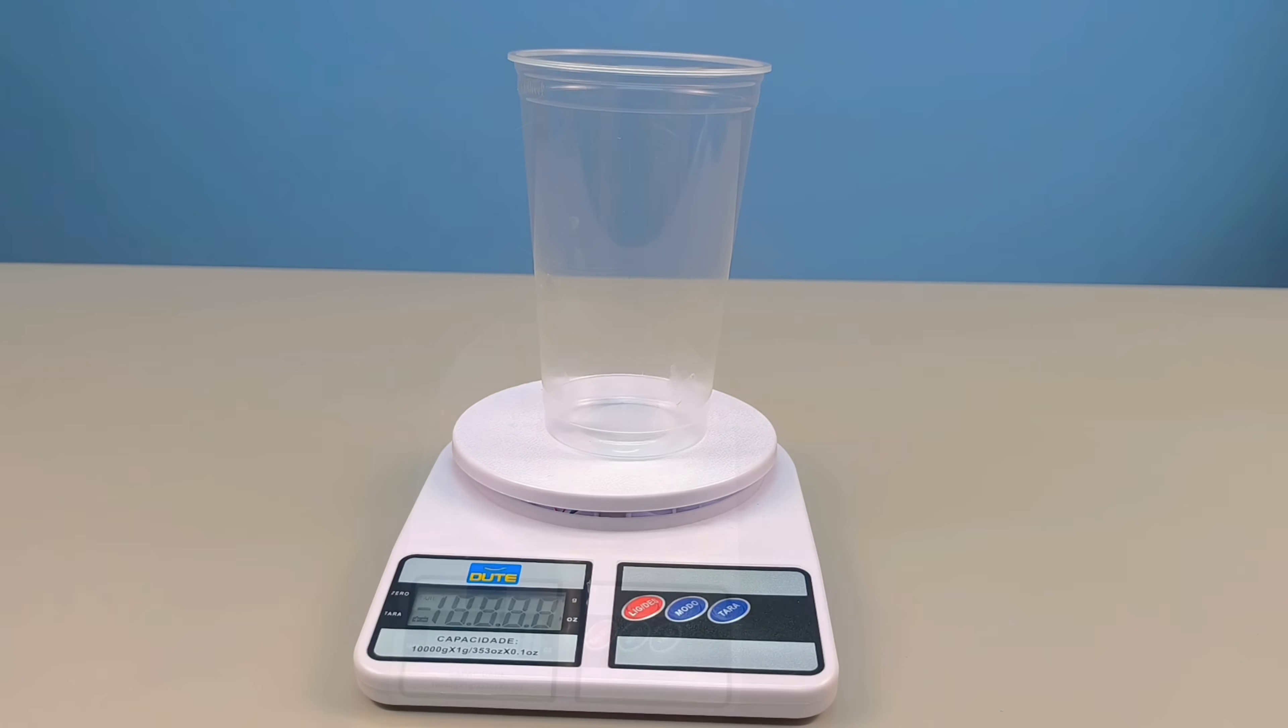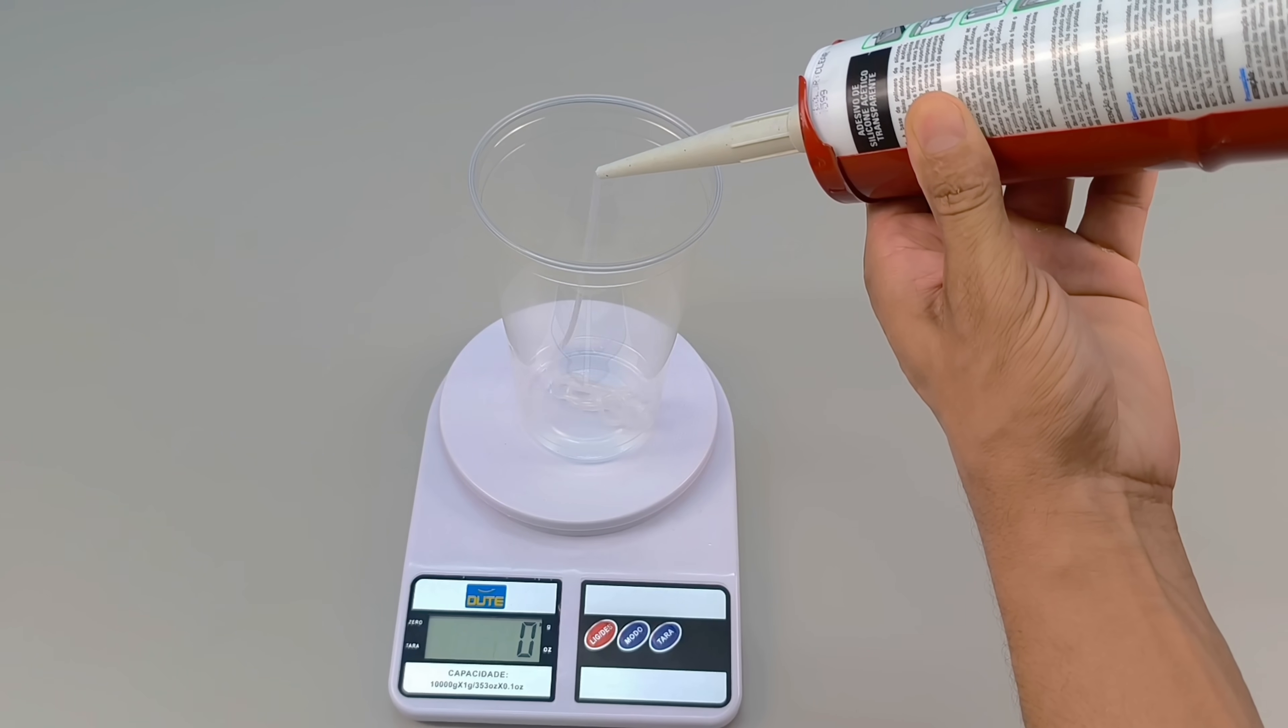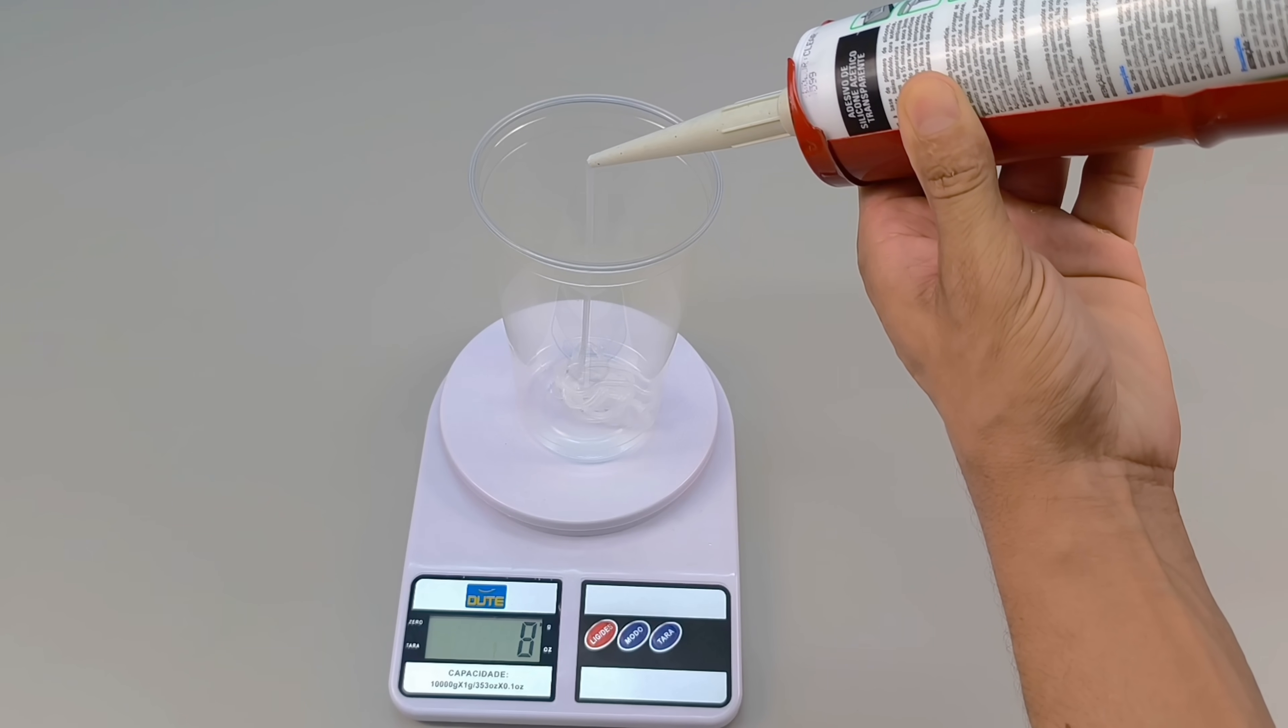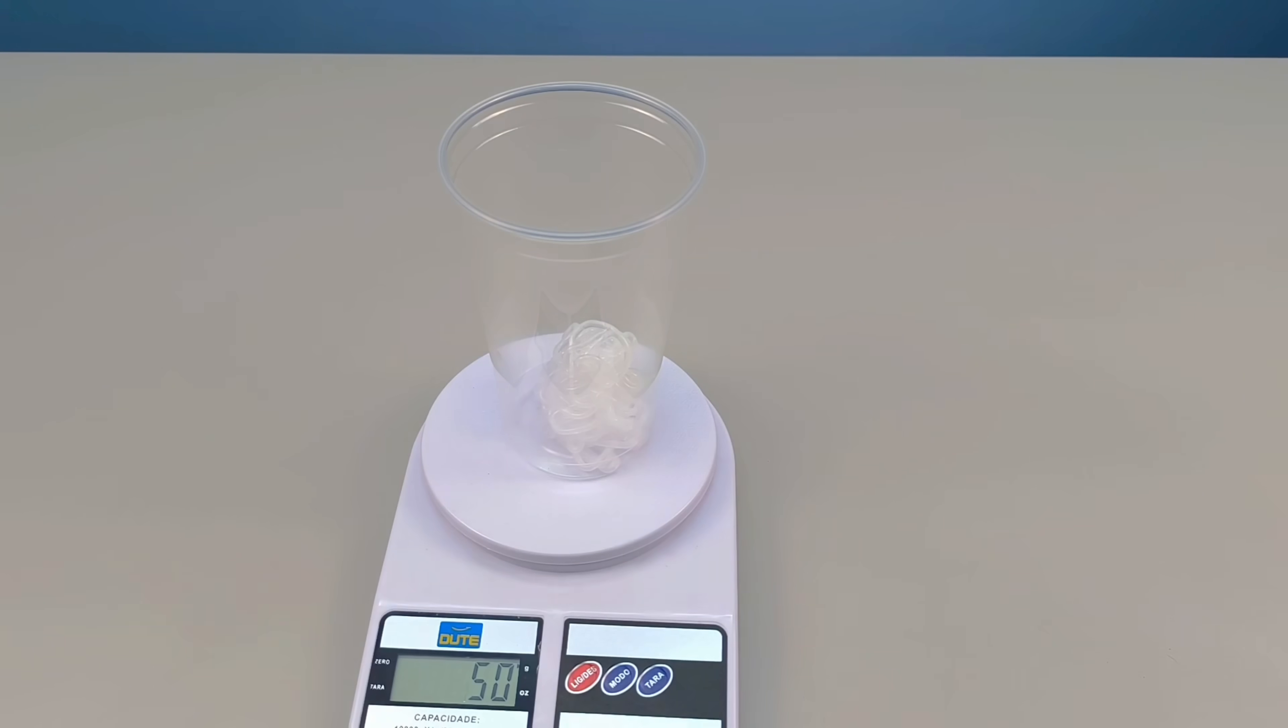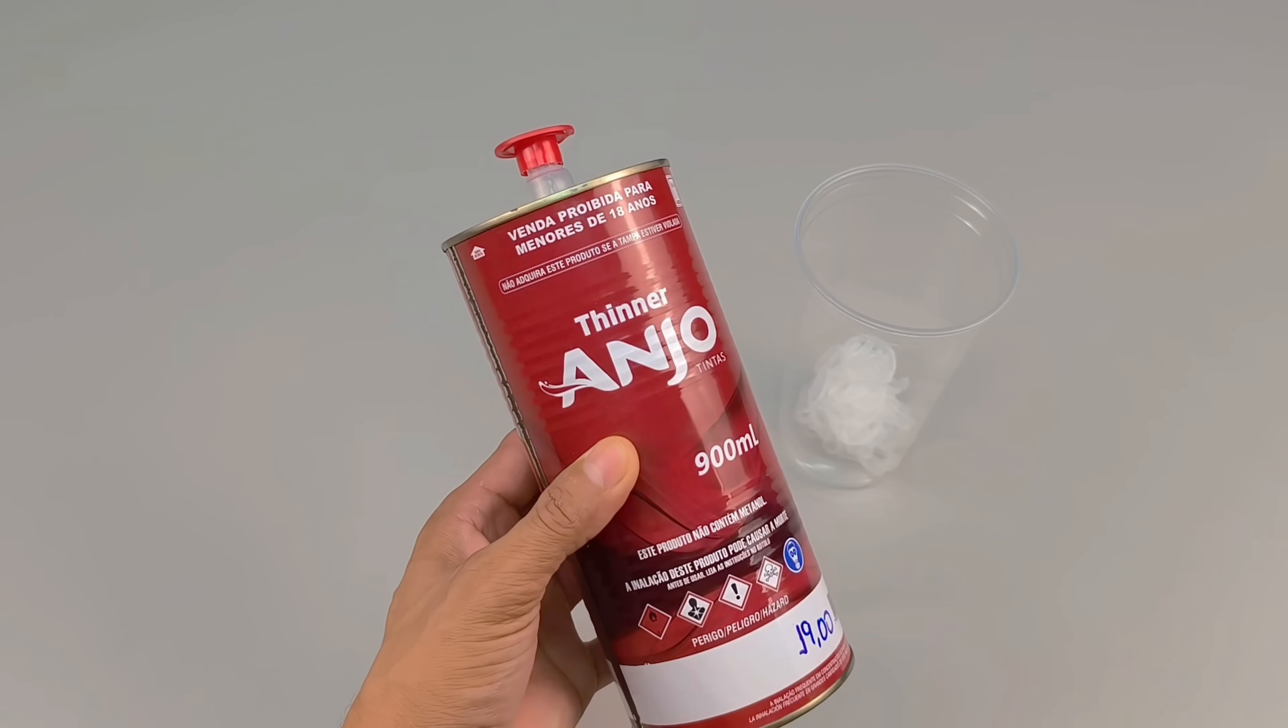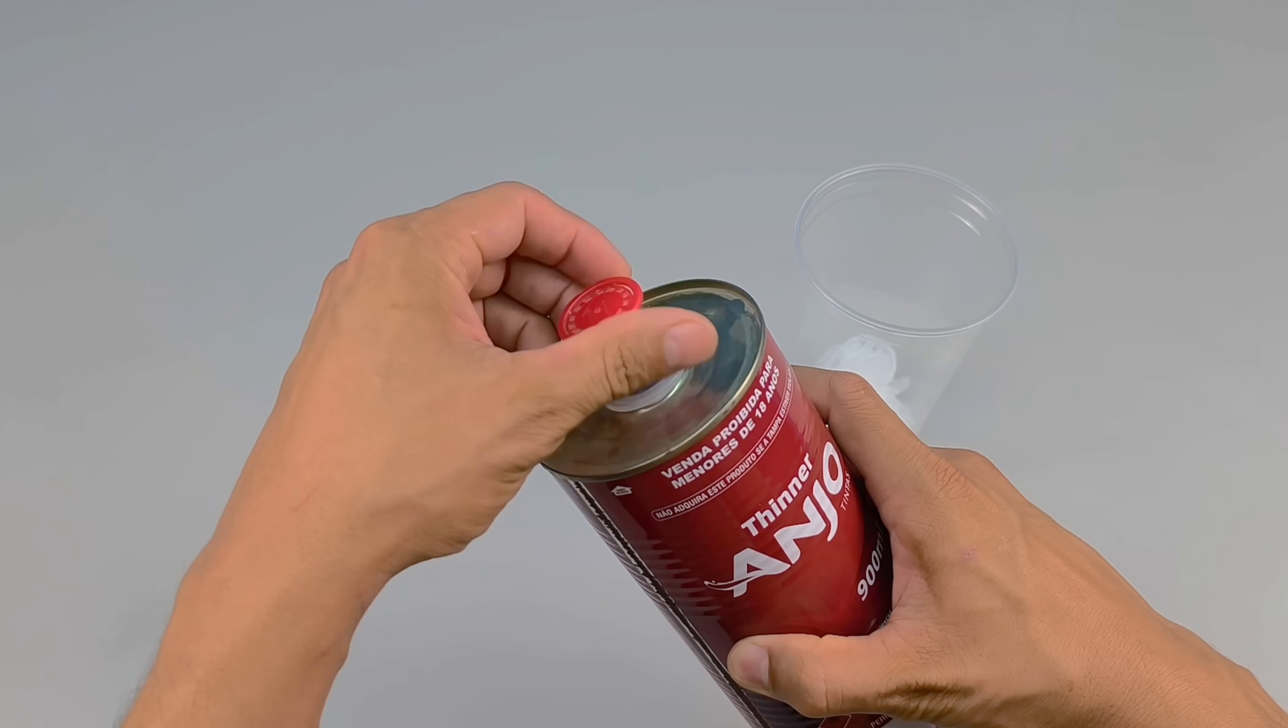We start with the silicone. To maintain control and ensure precision in the process, I use a highly sensitive scale and carefully separate 50 grams. But here's the most important detail: this quantity isn't a fixed rule. It all depends on your needs, the size of the project you intend to complete, and even the type of surface you want to transform.